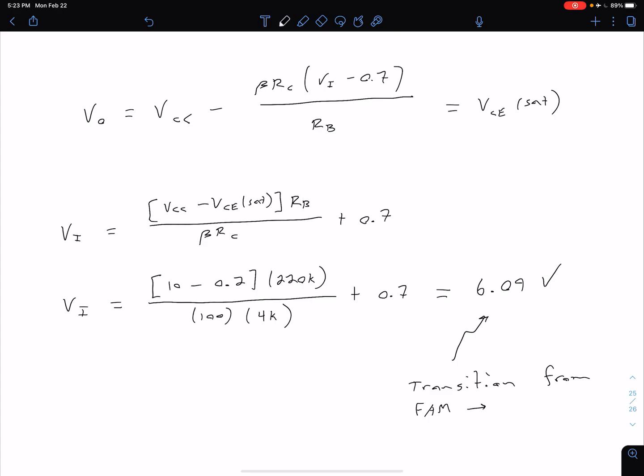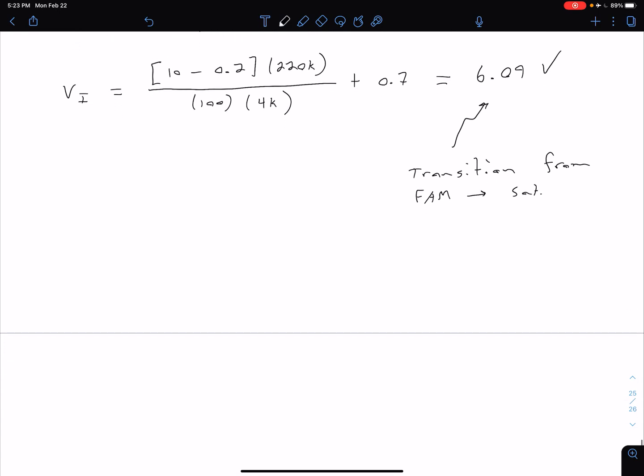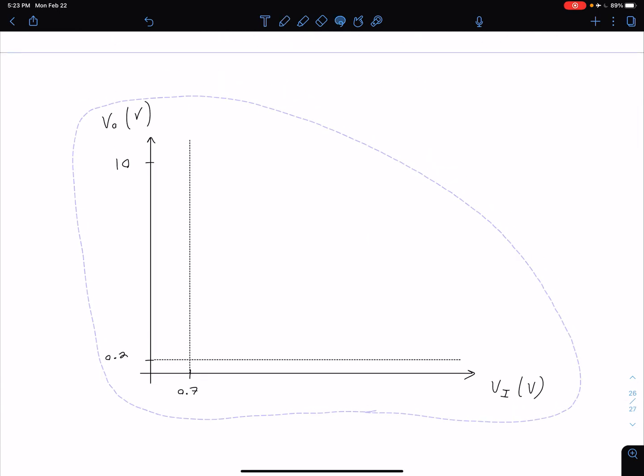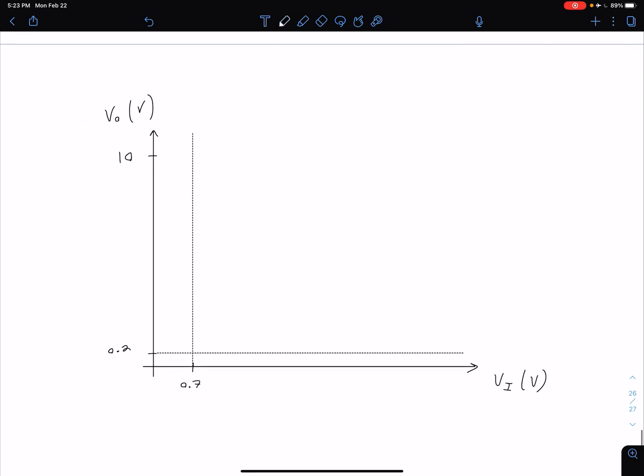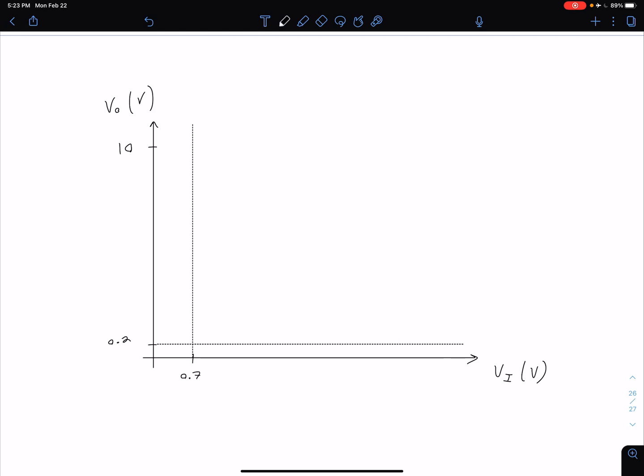What we can do then is we can come and we can plot our Vout versus VN which remember was our whole goal coming into this. I have Vout as my dependent variable on the vertical axis and VN is my independent variable on our horizontal axis.